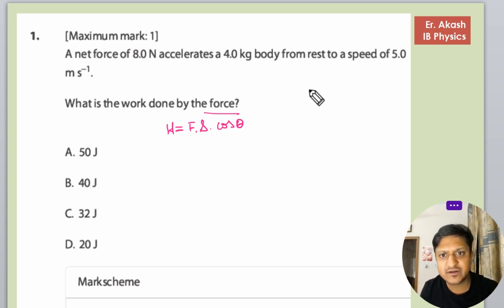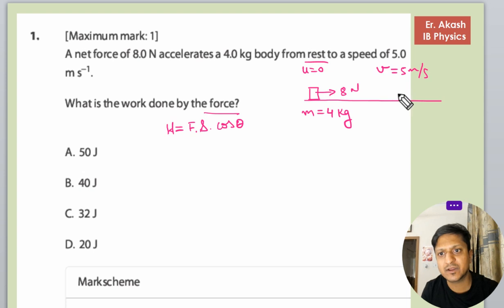The question says there is a body with net force applied of 8 Newtons and the mass of the body is 4 kg. The initial velocity is 0 and then the final velocity becomes 5 meter per second when it moves and reaches here.